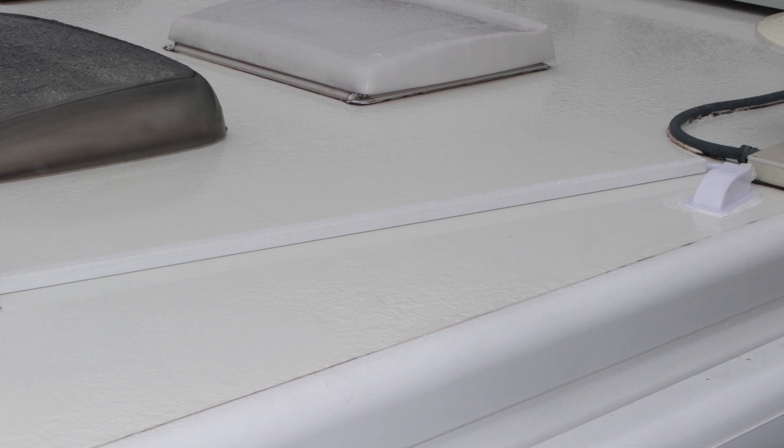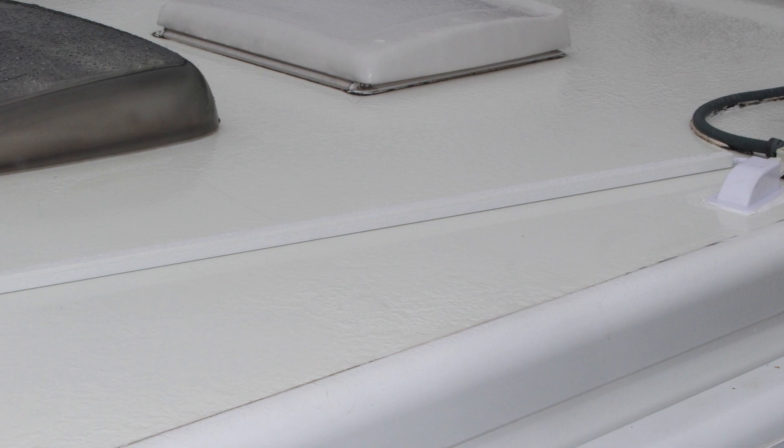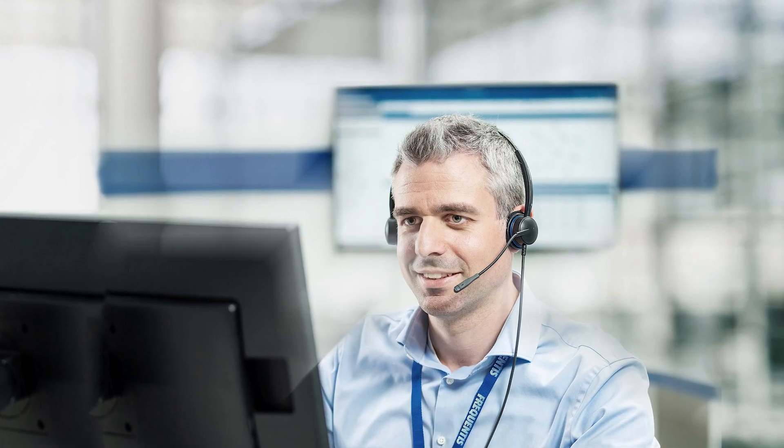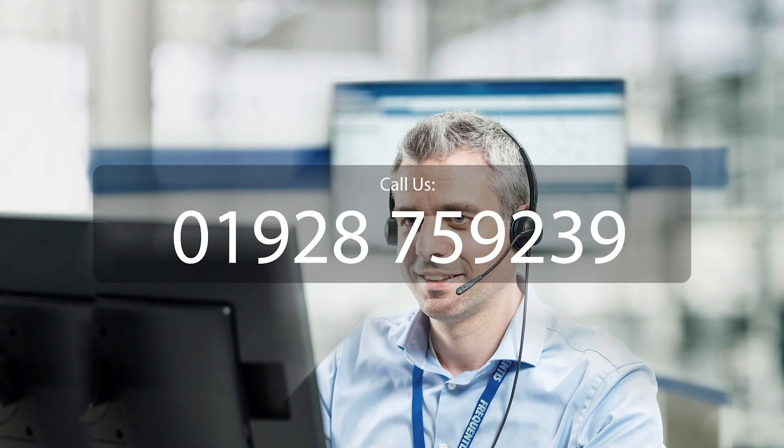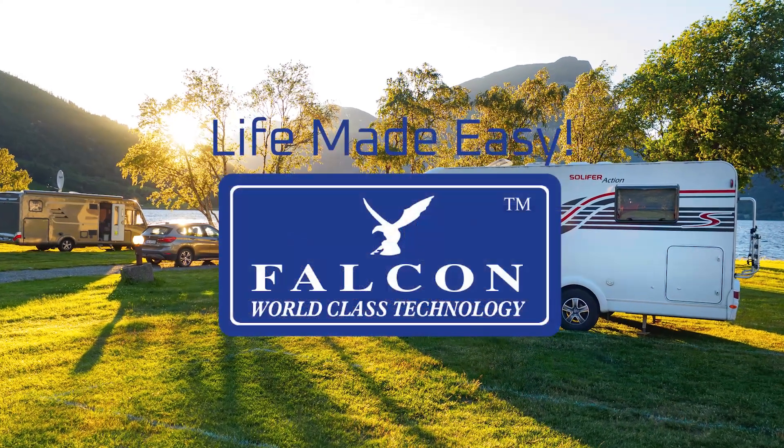When everything is fitted and working hide the cables on the roof using trunking and tidy any mess made during the installation. For any assistance when installing give us a call at 01928759239. Life made easy by Falcon.